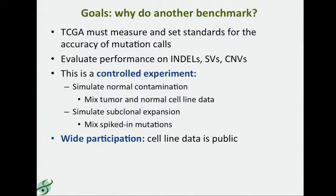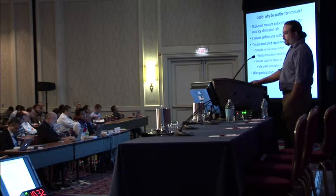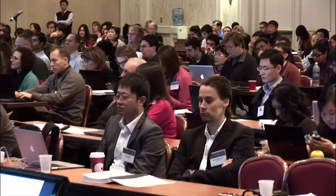So why is it important that we do another benchmark? We've done three — why do another? If we're going to accomplish the goal of comprehensively characterizing cancer genomes, TCGA has to get together, measure, and set standards for the accuracy of mutation calls. In this benchmark, we're being more comprehensive about the variety of mutations we're considering. In addition to single nucleotide variants, we want to extend this to indels, structural variants, and copy number variants to get the full spectrum of variation and evaluate how different mutation calling algorithms are performing across these different types of somatic variants.